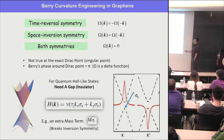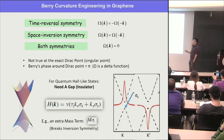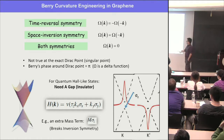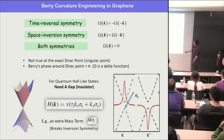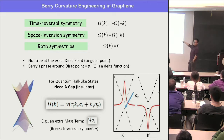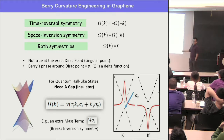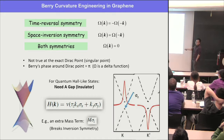Starting from this singularity, you can engineer Berry curvature. For a topological insulator you want a gap. If you introduce a gap — for example, an m·sigma-z term — the gap will open. This sigma-z term means the sublattices have different potential/energy, breaking inversion symmetry. The time-reversal constraint still holds, so you can have Berry curvature with opposite signs at k and -k. Once you open a small gap, the Berry curvature becomes a peak with finite width instead of a delta function.